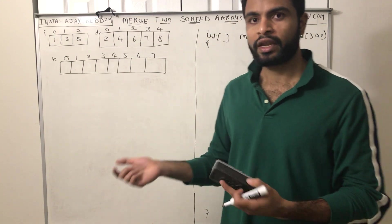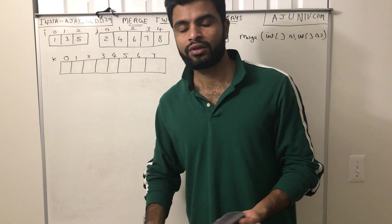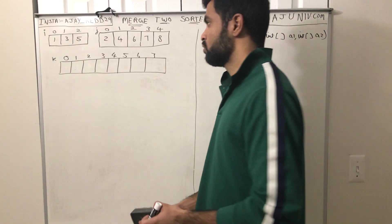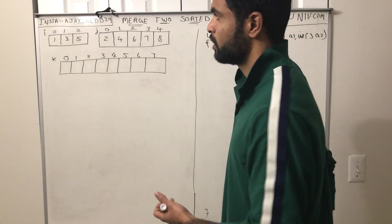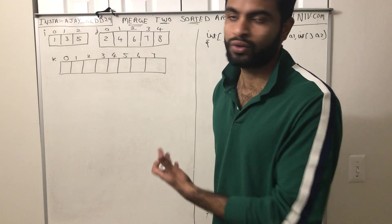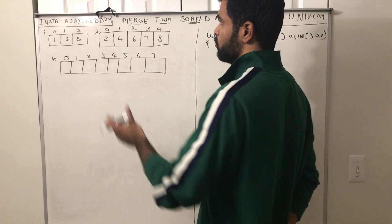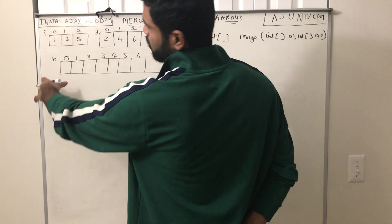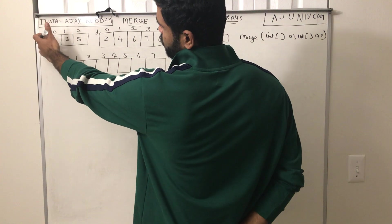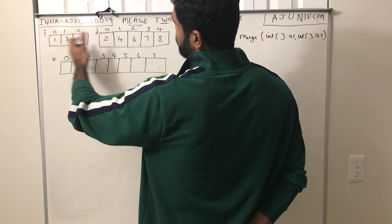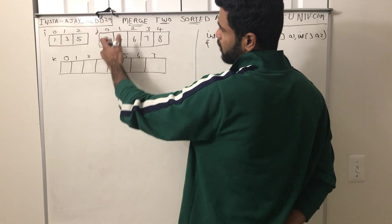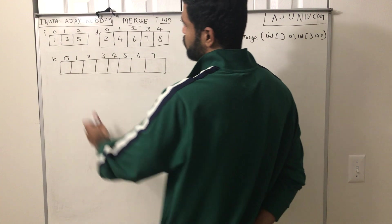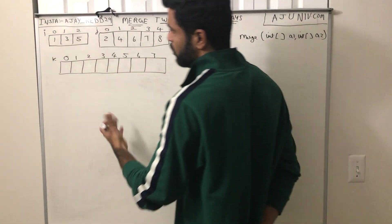Let's see how we can actually do this in linear time, that is O(n). For performing it in O(n), I want to take three pointers: i, j, and k. So i is pointing to the first array, j is pointing to the second array, and k is pointing to the third (result) array.